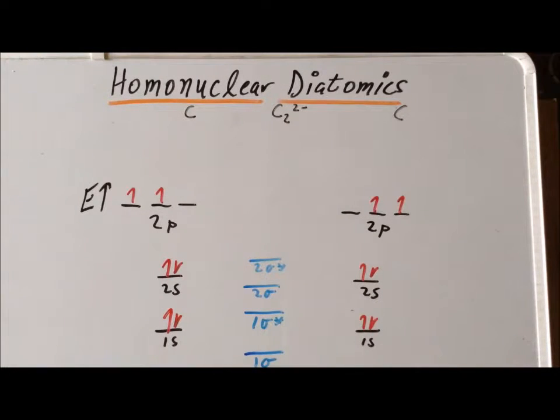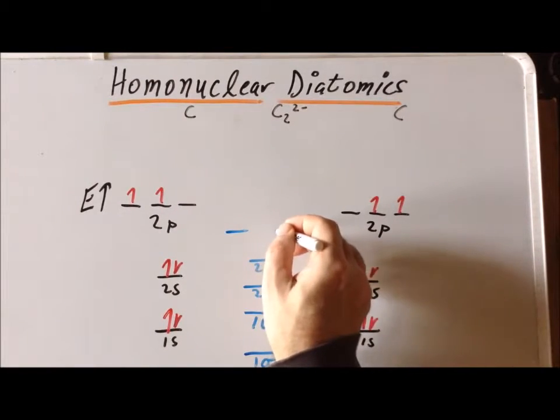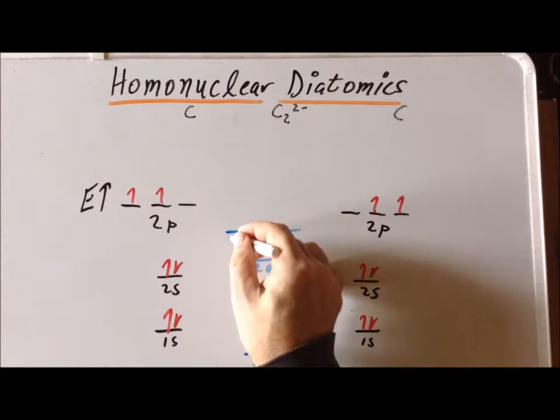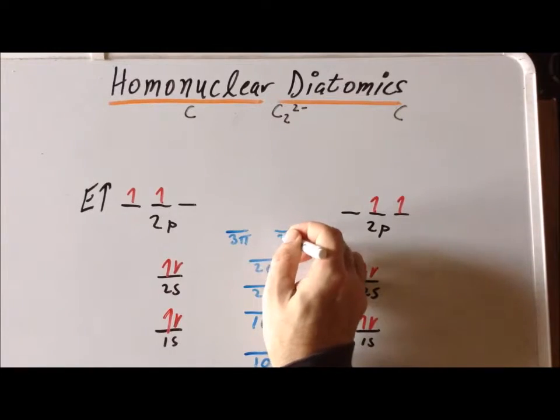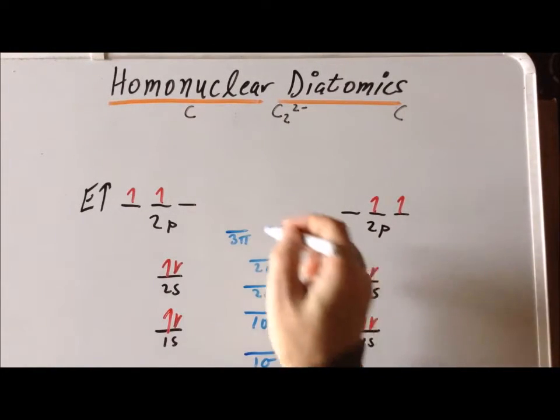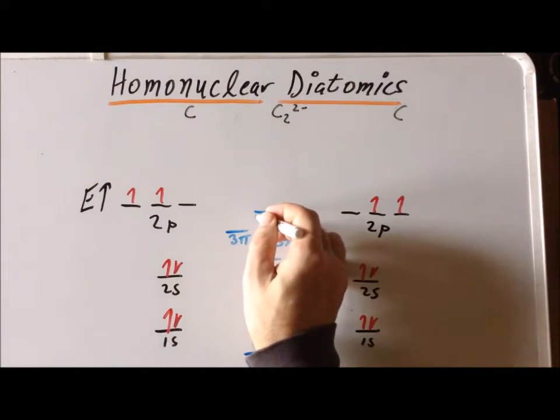And then with the p orbitals, we have the lowest energy combination is a pi bonding, and we have two of those, so it's doubly degenerate, followed by a sigma bonding combination.